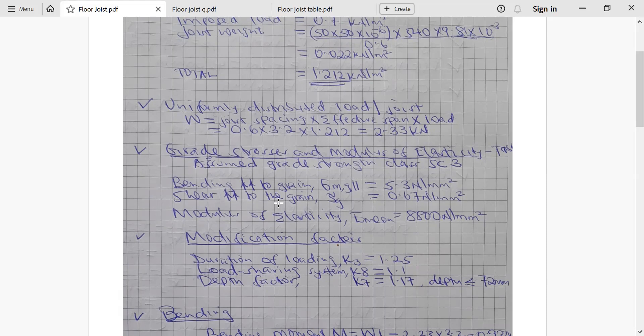From there, we go to grade stresses and modulus of elasticity. Remember, we took our grade strength class as SC3. Let us proceed and obtain the bending parallel to grain, shear parallel to grain, and modulus of elasticity E min, which means E average from the table. We shall move along SC3.